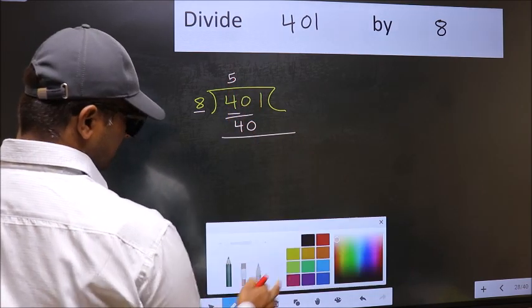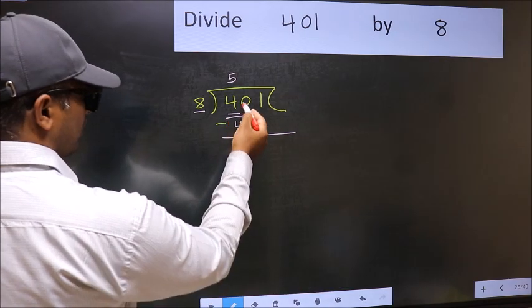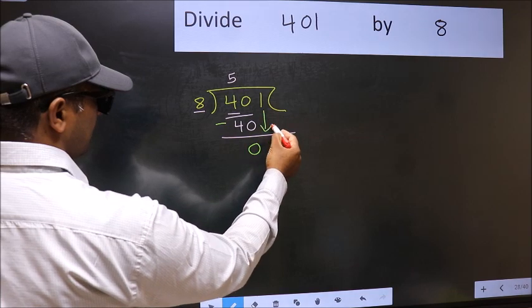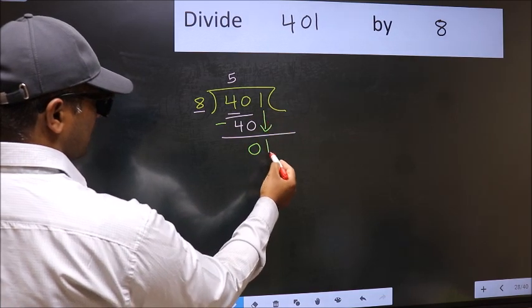Now we should subtract. 40 minus 40, 0. After this, bring down the beside number. So 1 down.